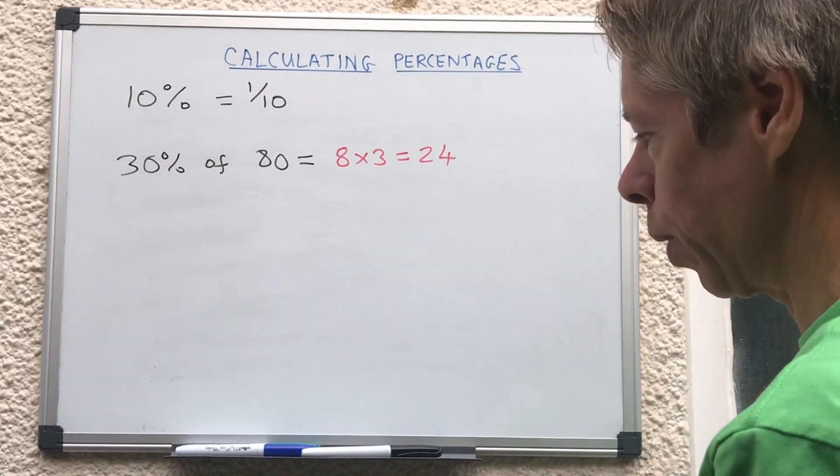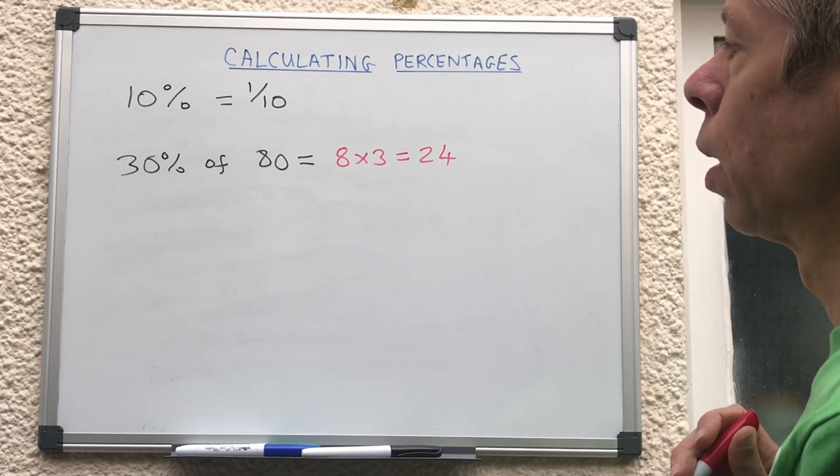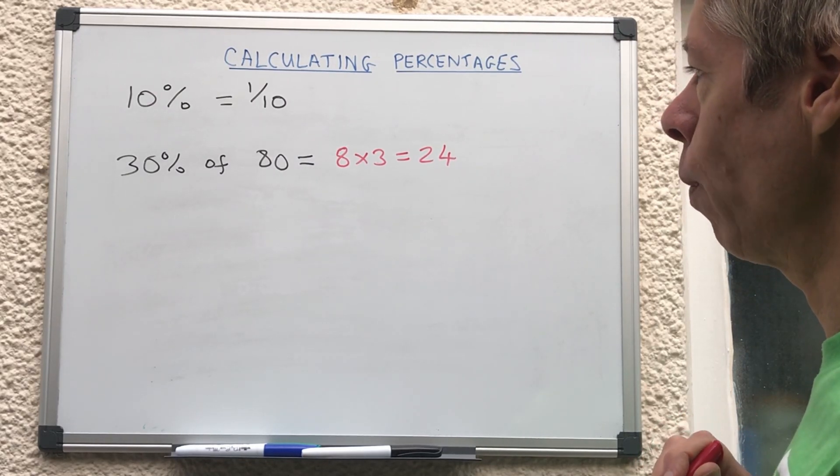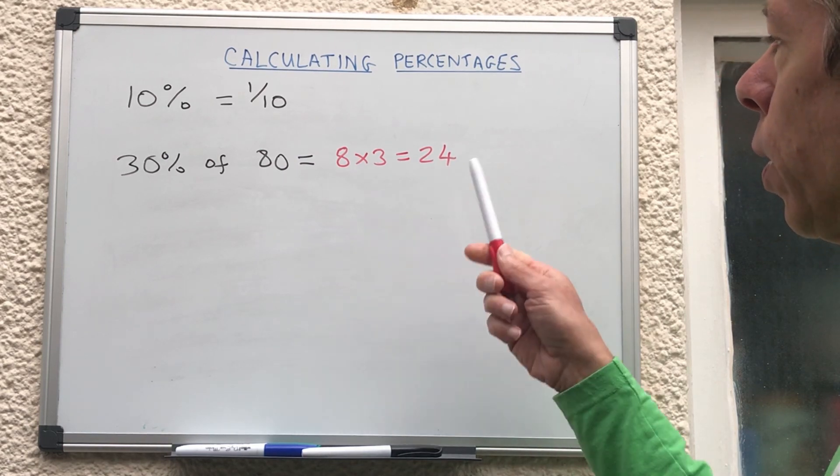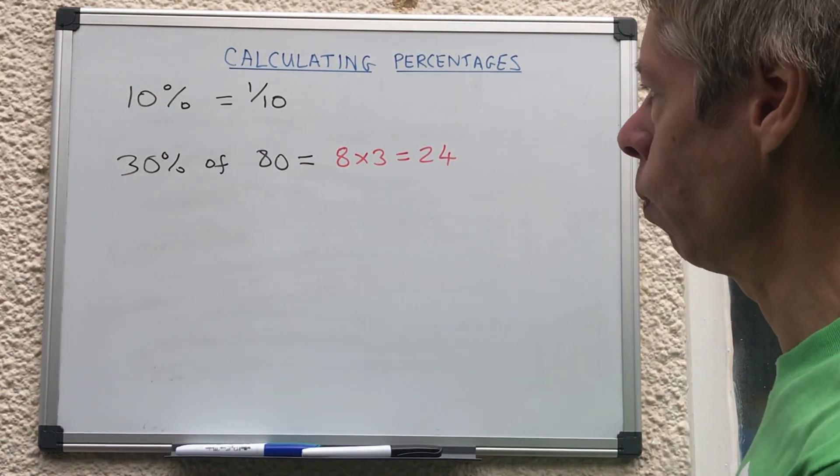So next time you're in a shop and there's a 30 percent sale and your mum says that 80 pound dress, how much do I get off? Well you say oh it's 24 pounds off mum, so that would mean it would cost 56 pounds. Wow you're so good at maths!